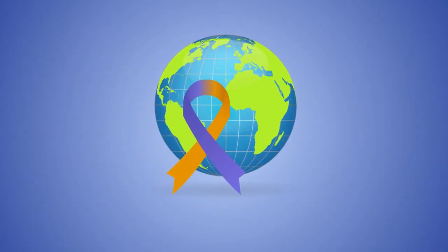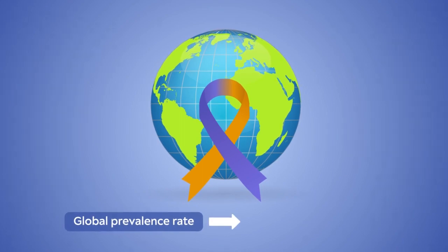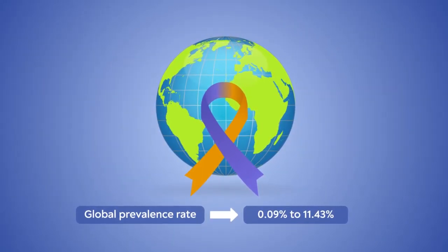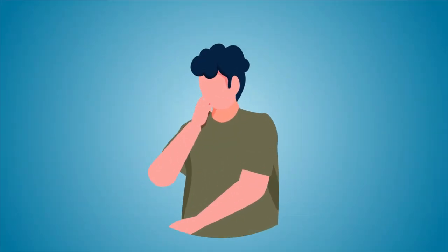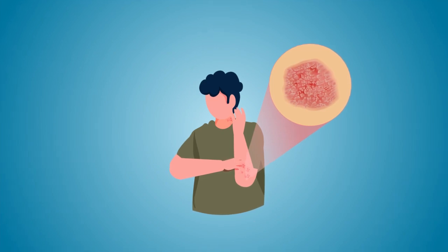The World Health Organization reports that psoriasis prevalence in countries ranges between 0.09% and 11.43%. Patients with psoriasis develop patches of dry, scaly skin that itch terribly.